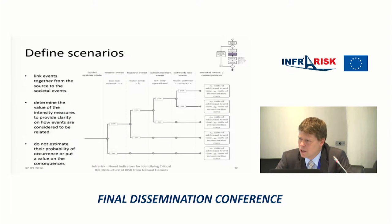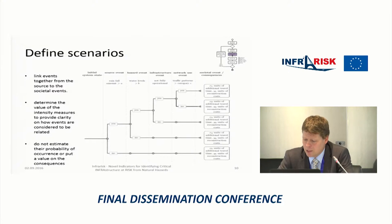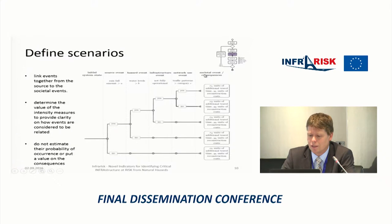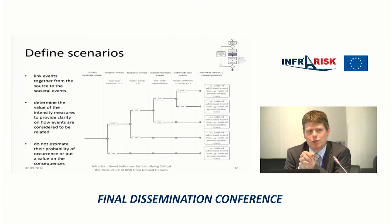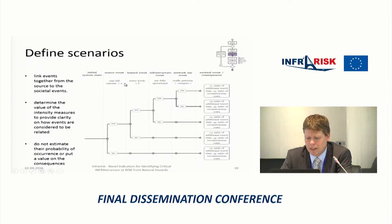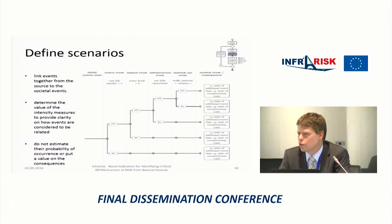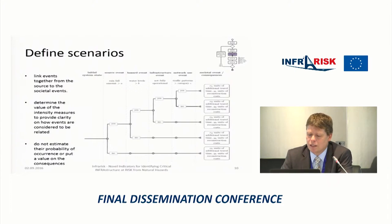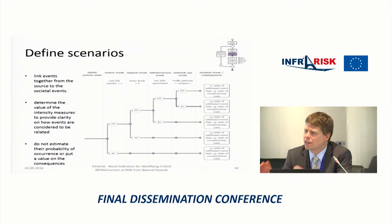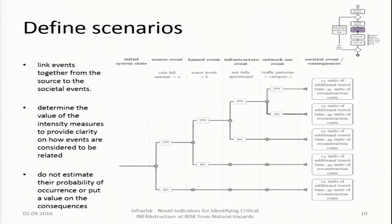Once the events are defined, you need to be clear about how they're strung together in the scenarios you want to investigate — linking from the source event, to the hazard event, to the infrastructure event, to the network use event, to the societal event on which you put the value. This involves determining the intensity measures that tell you if a certain event is triggered: for example, if rainfall in a certain area is above a threshold, that means a hazard event of a certain level for certain pieces of infrastructure. It's important at this stage to get agreement on which scenarios are actually important, and then in a next step figure out the values.